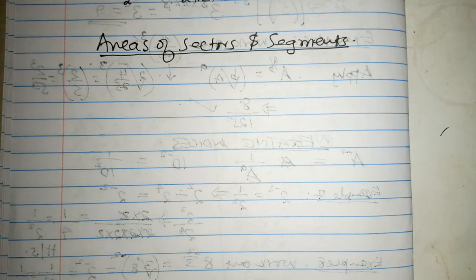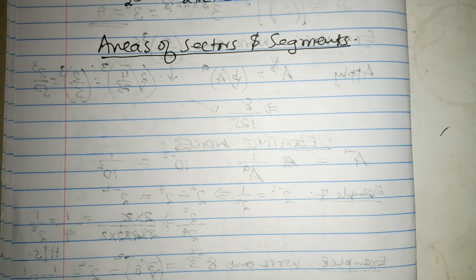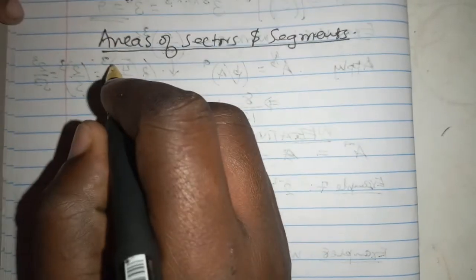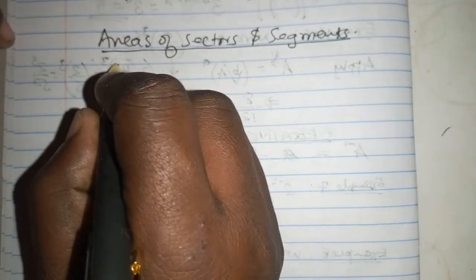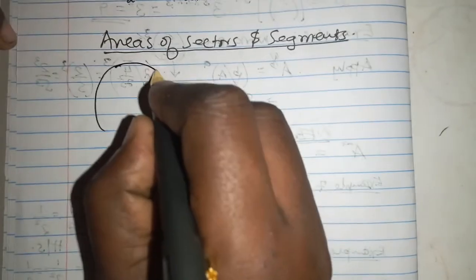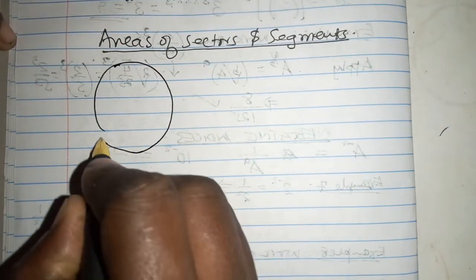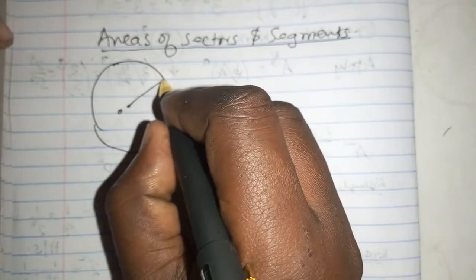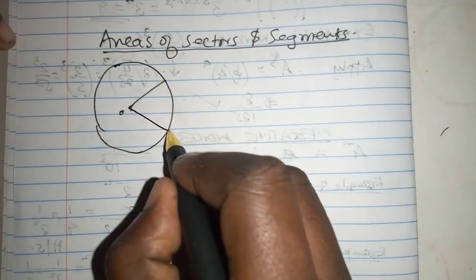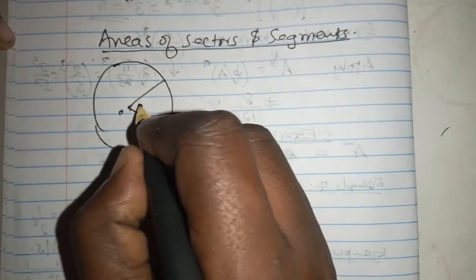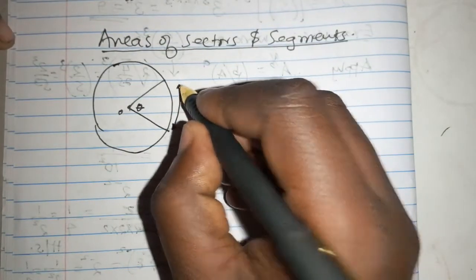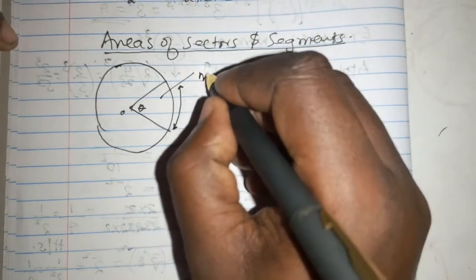And we also told that when you are using radians, it's very easy to calculate the area of a sector. First of all, let us remind ourselves what a sector is. If you happen to have a circle of this nature, with of course center O, that is a radius, that is a radius, and this is angle theta in between, and this is an arc length.